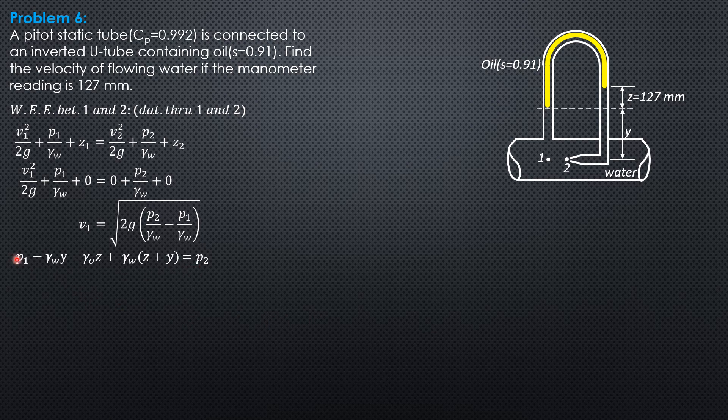Plus γ of water times (z plus y) equals pressure at 2. So we have p₁ to the right. This term negative specific weight of water y and positive specific weight of water y can be cancelled. What is left is negative γ of oil z plus γ of water z equals p₂ minus p₁.